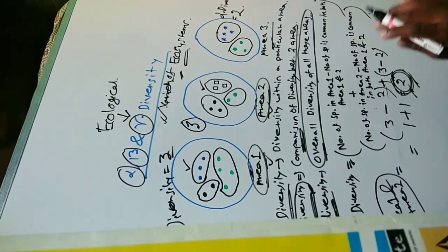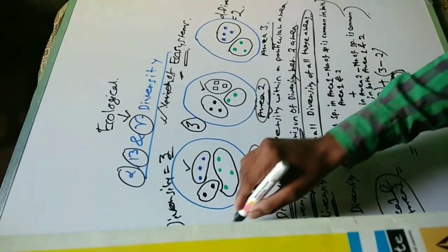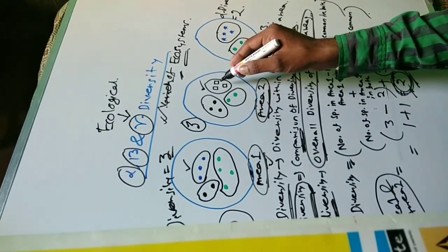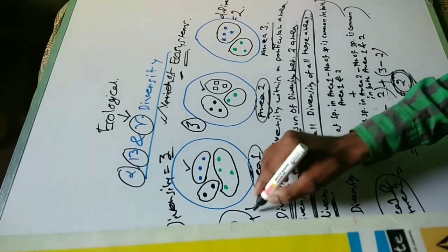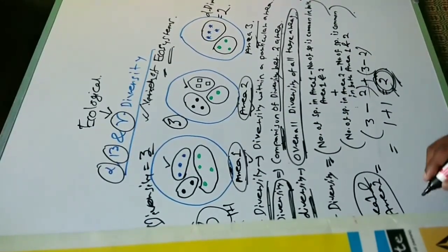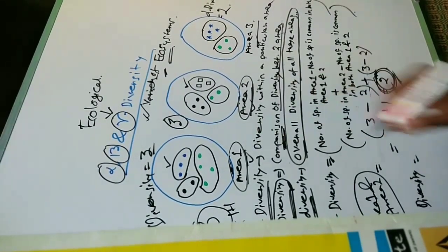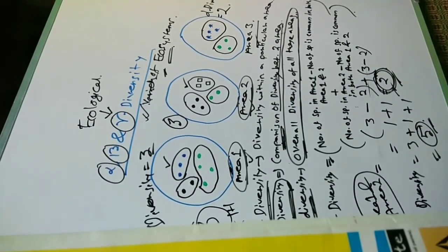Gamma diversity means the overall diversity of all these communities or areas. In area 1 there are 3 kinds of species. In area 2 there are also 3 kinds but one is different, so plus 1. In area 3, the different one adds another plus 1. So gamma diversity is 3 plus 1 plus 1 equals 5 — that is the overall diversity of all the areas.